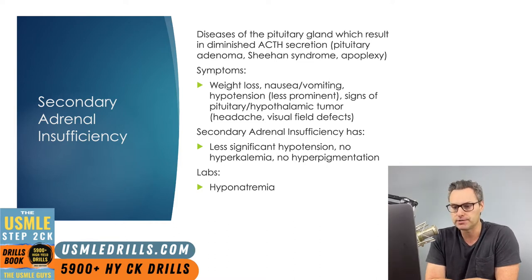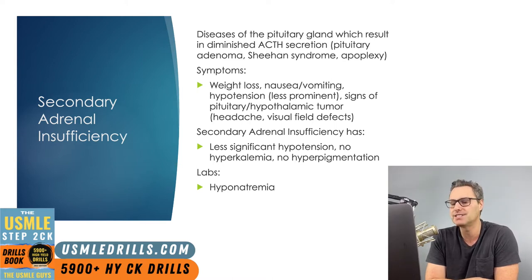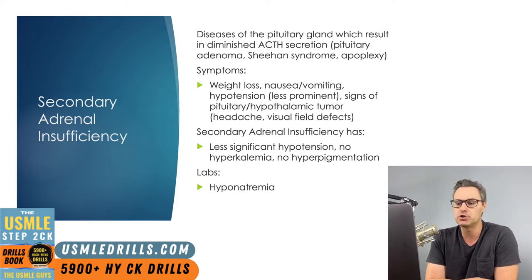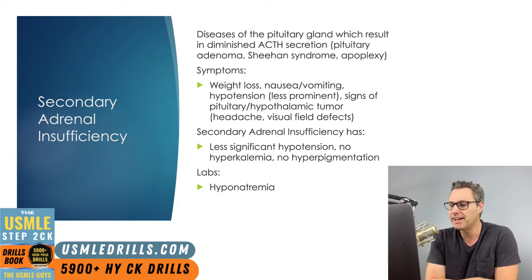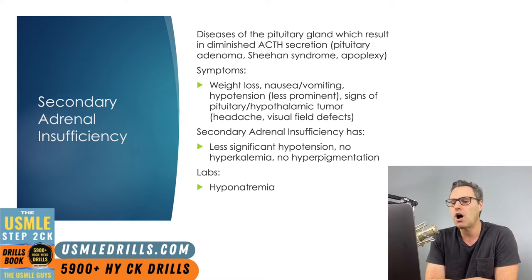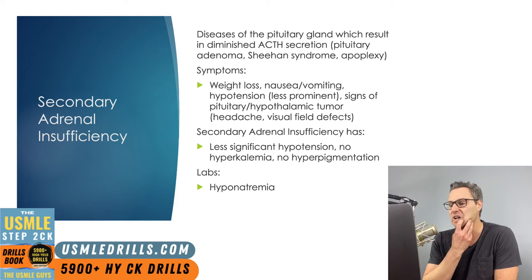Now let's look at secondary adrenal insufficiency. For the STEP 2 CK exam, you need to differentiate between similar diagnoses. Primary disease occurs at the level of the adrenal glands; secondary is at the level of the pituitary. Anything that damages the pituitary's ability to produce ACTH can cause secondary adrenal insufficiency — this includes adenomas, Sheehan syndrome, etc. You'll often see signs of a pituitary or hypothalamic tumor, meaning headache and visual field deficits.